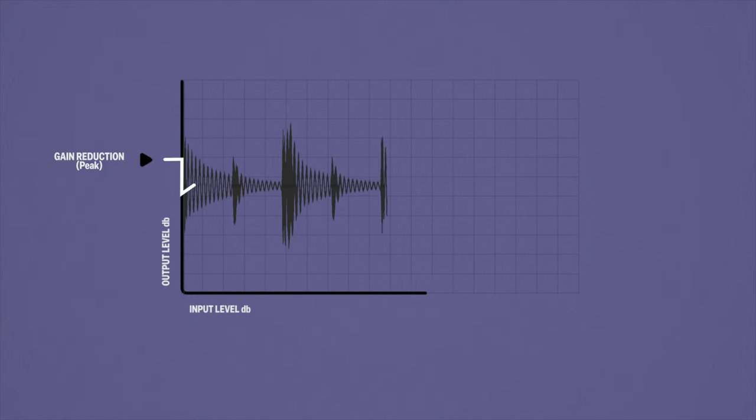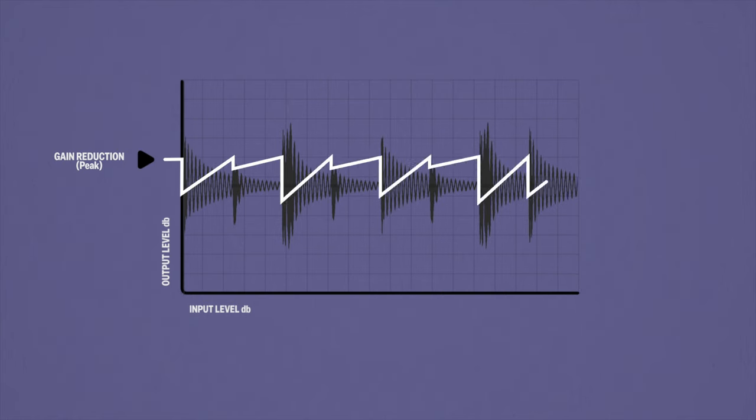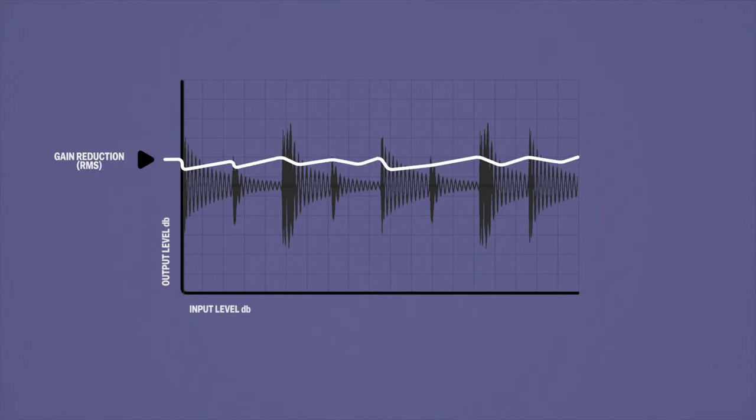It's standard to find Peak and RMS settings in each compressor, and most have the ability to switch between the two. Basically, it's two different ways that the compressor listens to the incoming signal. Peak means the compressor will act based on the transient peaks within the audio signal. Whereas RMS is based on the average sound level of the incoming signal — the compressor will only kick in if the average sound level goes beyond the threshold for a certain period of time. RMS is better for general levelling of tracks or overall mixes, helping to smooth out the differences between louder and quieter parts, whereas Peak is used for catching and reducing transients.